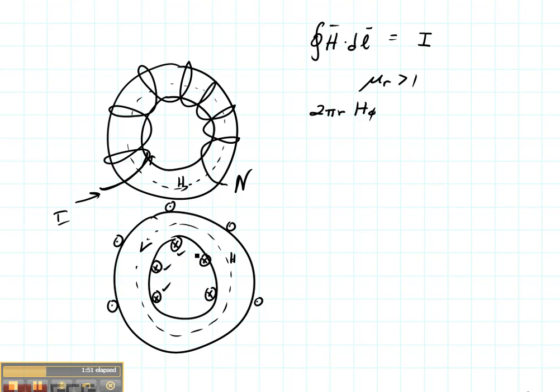The only parts that I need to consider are these parts right here that are going in because the other parts outside, such as these, are not enclosed in my Gaussian surface. So this is equal to n times the current that is flowing in the wire.